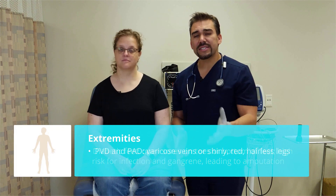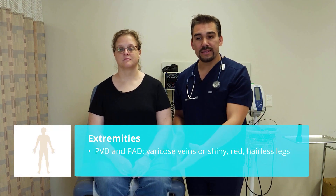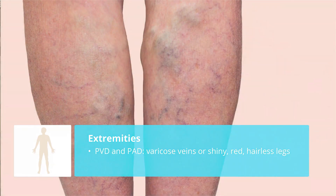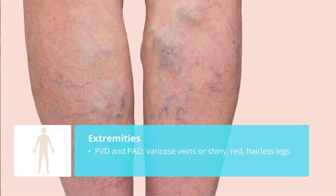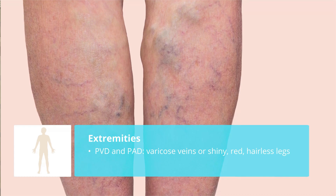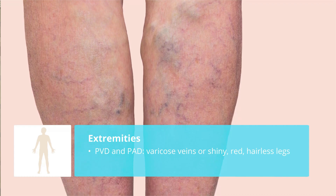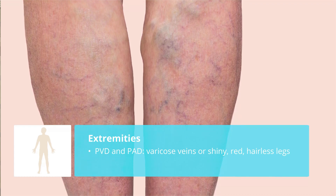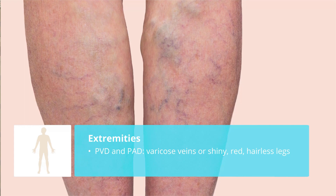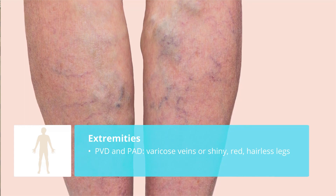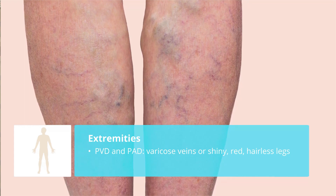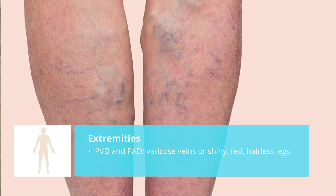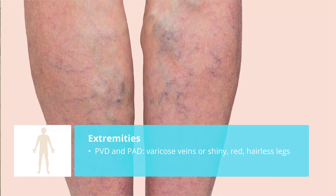The last two things you might see on the extremities are PVD and PAD — that peripheral vascular insufficiency — basically meaning that blood can't get down and back up to the lower extremities. So we might see varicose veins as well as shiny, red, hairless legs.